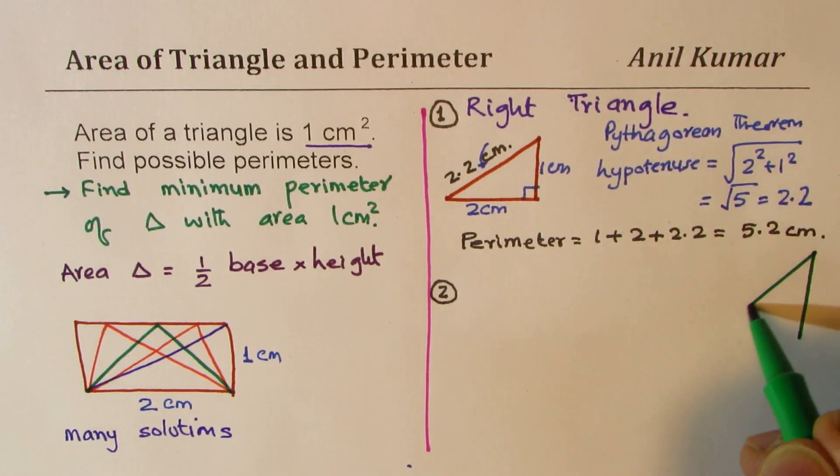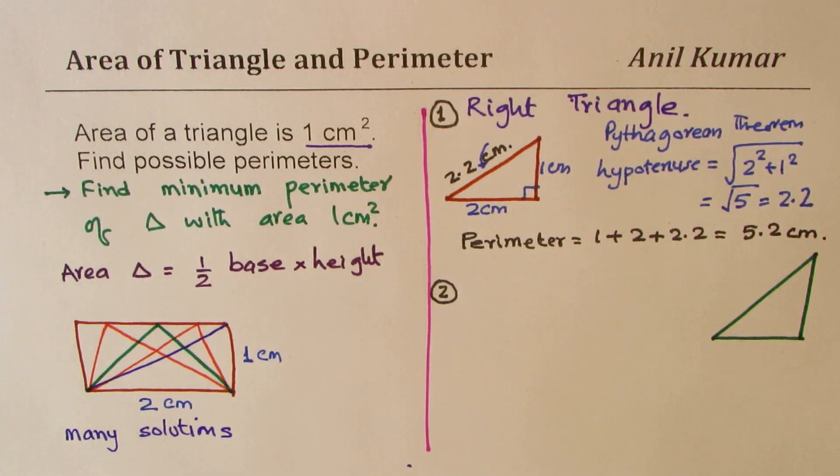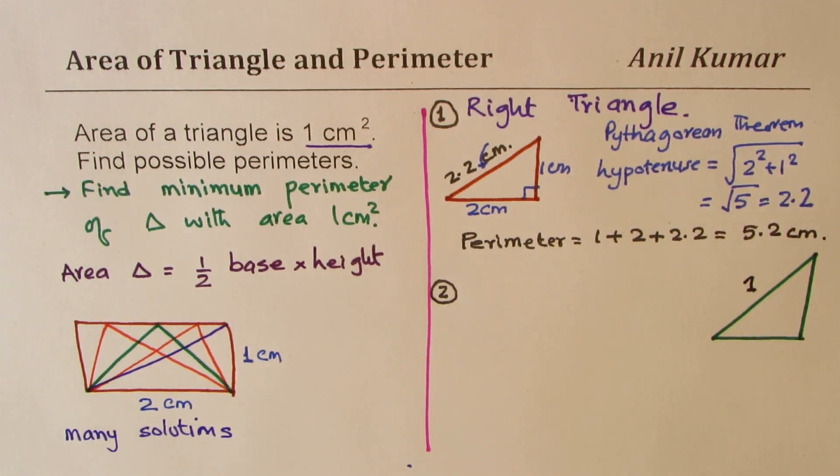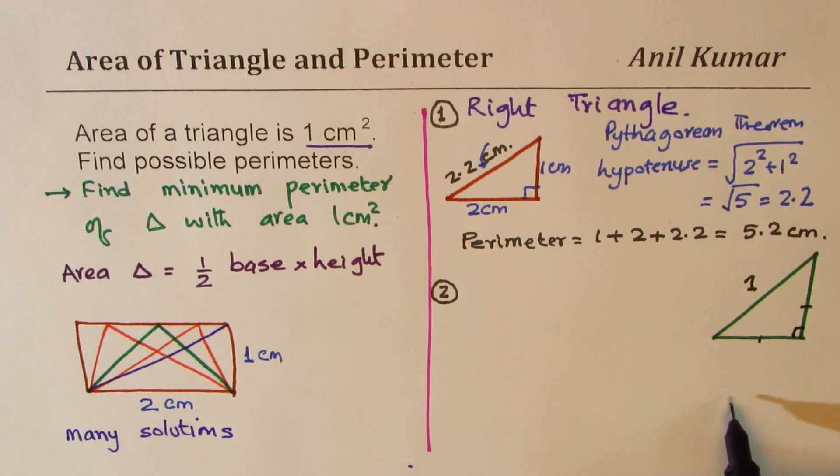In this triangle, I'm going to take hypotenuse as one. Well, so that is one thing very critical to figure out.